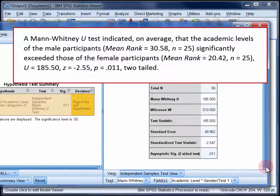So you could write up your findings like this. A Mann-Whitney U test indicated on average that the academic levels of the male participants significantly exceeded those of the female participants.